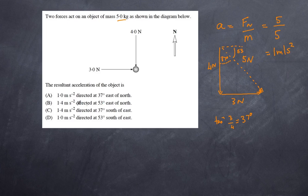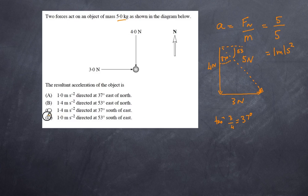Looking at the answers, A and D both have one meter per second squared. The direction is at 37 degrees towards the east of south, or equivalently 53 degrees south from the east. Since the question asks if it's directed at 53 degrees south of east, the answer is D.